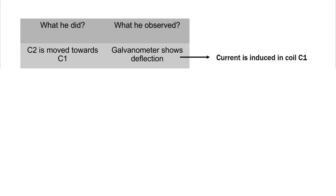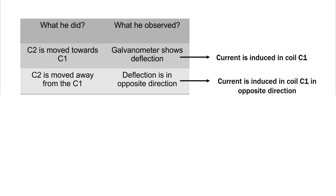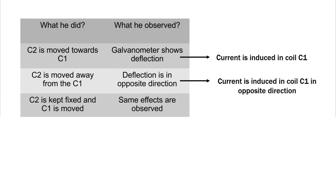When coil C2 is moved towards coil C1, the galvanometer shows a deflection, indicating that an electric current is produced in coil C1. In the second trial, when C2 is moved away from C1, the galvanometer shows deflection in the opposite direction, indicating that the direction of induced current in coil C1 is reversed.